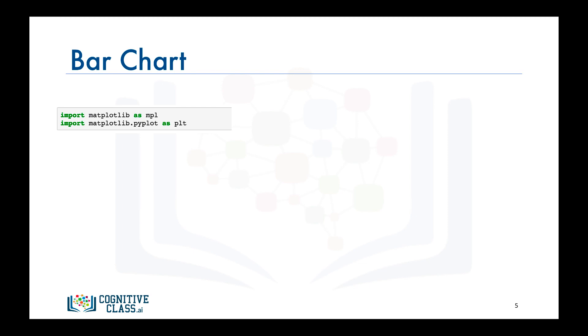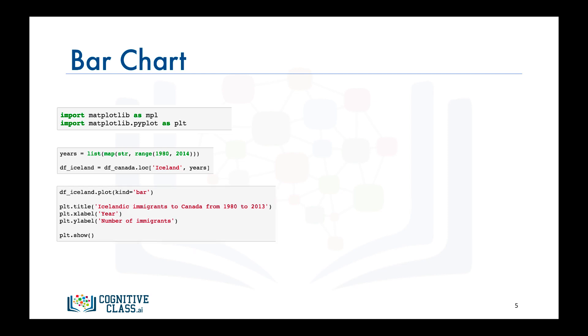Then we use the years variable to create a new dataframe, let's name it df_iceland, which includes the data pertaining to annual immigration from Iceland to Canada and excluding the total column. Then we call the plot function on df_iceland and we set kind equals bar to generate a bar chart.